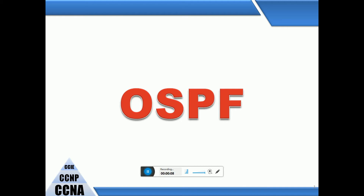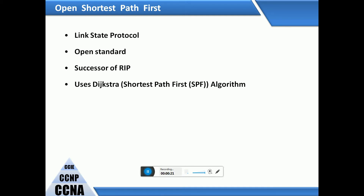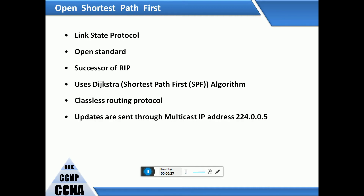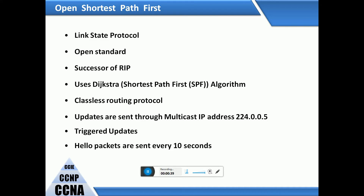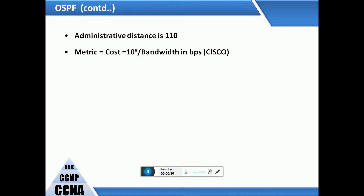OSPF stands for Open Shortest Path First. It is a link-state protocol and the open standard successor to RIP. It uses the Shortest Path First (SPF) algorithm. Routing protocol updates are sent through multicast IP address 224.0.0.5. Triggered updates — hello packets — are sent every 10 seconds. The OSPF administrative distance is 110. The metric cost is equal to 10 to the power of 8 divided by bandwidth in bits per second.